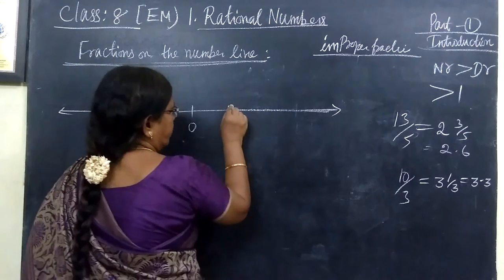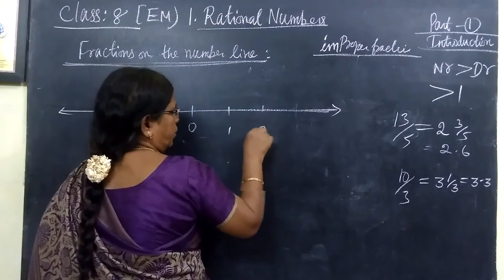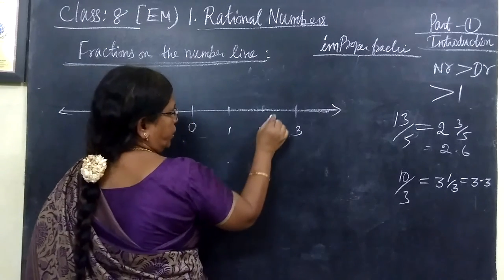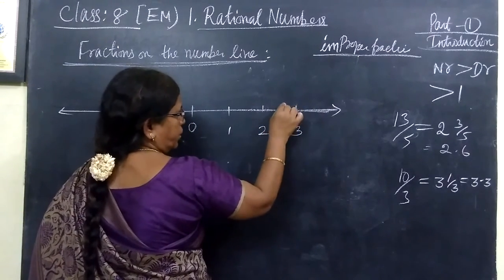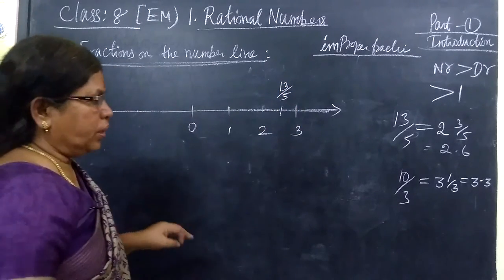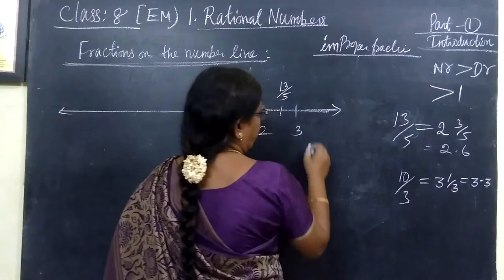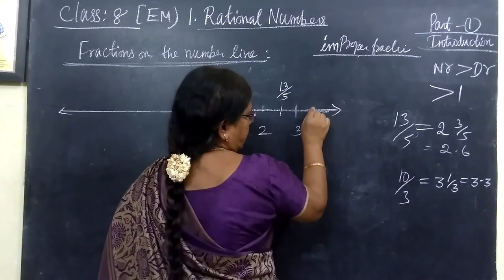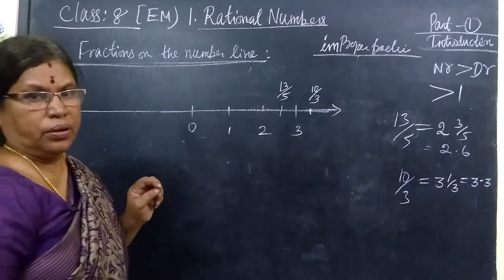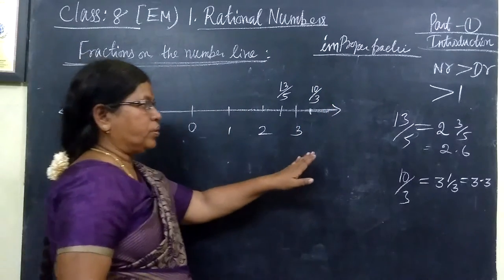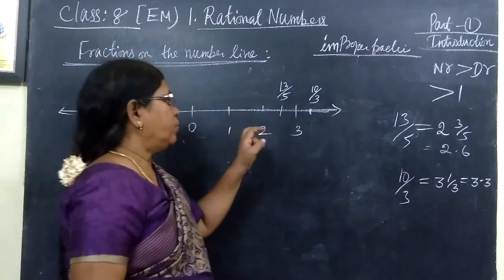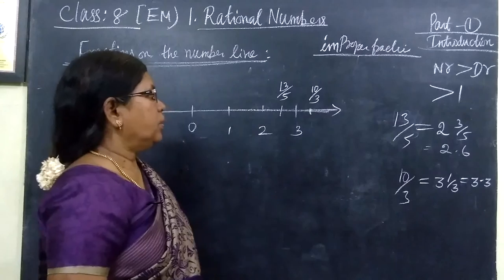2.6 means 1 then 2, 3. 2.6 means very right here. 2.6. Then here you can mark this as 13 by 5 you can mark. Then 10 by 3 means 3.3. So here you can mark this as 10 by 3. So improper fraction we change into mixed fraction. Then approximately only we can mark this in the number line.